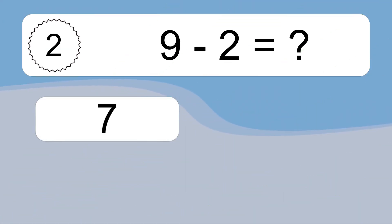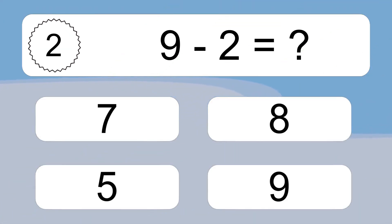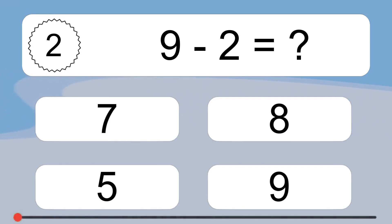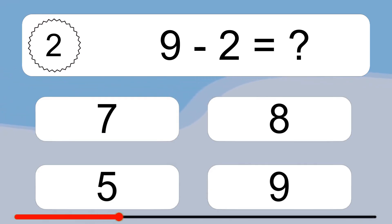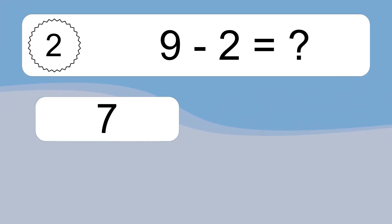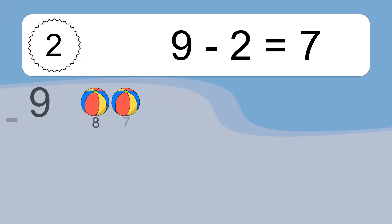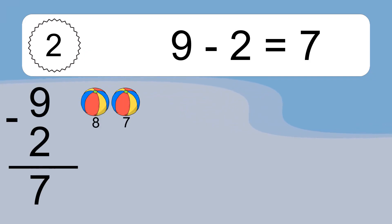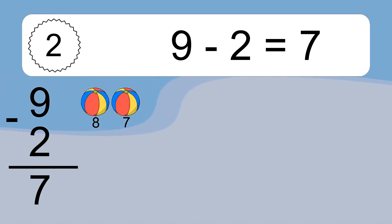9 minus 2 equals what? 9 minus 2 equals 7. Let's count it: 8, 7.